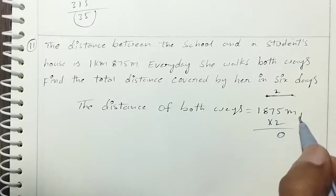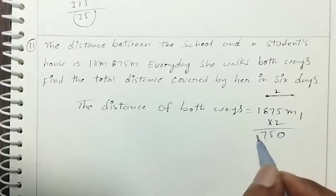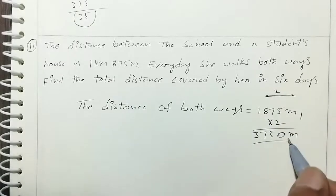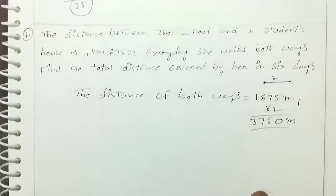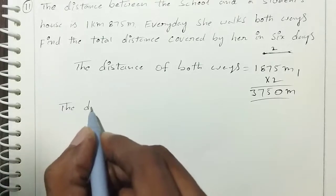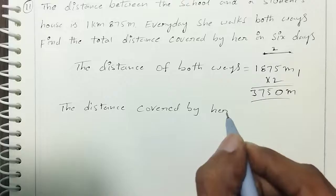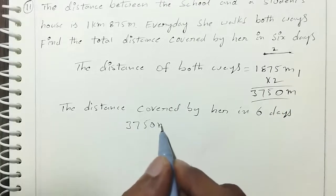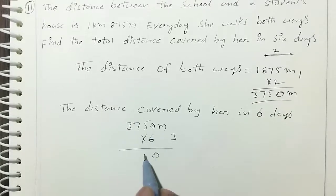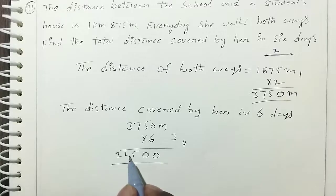Calculating 1,875 m × 2: 2 × 5 is 10 carry 1; 2 × 7 is 14 plus 1 is 15; 2 × 8 is 16 plus 1 is 17; 2 × 1 is 2 plus 1 is 3. Daily both-way distance is 3,750 m. Multiplying by 6 days: 6 × 0 is 0; 6 × 5 is 30; 6 × 7 is 42 plus 3 is 45; 6 × 3 is 18 plus 4 is 22. Total distance in 6 days is 22 kilometers 500 meters.